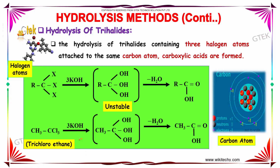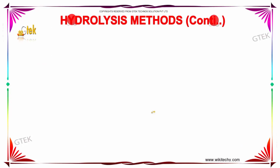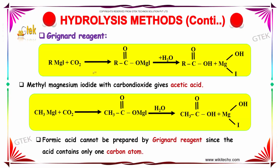A similar reaction takes place for trichloroethane. When the reaction involving Grignard's reagent is carried out, it produces acetic acid. That is, CH3MgX when made to react with carbon dioxide produces CH3C(=O)OMgX. On further hydrolysis, it produces CH3C(=O)OH — which is carboxylic acid — along with a side product MgXOH. Note that formic acid cannot be prepared by the Grignard's reagent since the acid contains only one carbon atom.